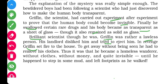Griffin's landlord disliked him and tried to eject him from his house. In revenge, Griffin set fire to the house. Since he had consumed the medicine and become invisible, to get away without being seen he had to remove his clothes. Thus he became a homeless wanderer — without clothes, without money, and quite invisible — until he happened to step in some mud, which made his footprints visible as he walked.